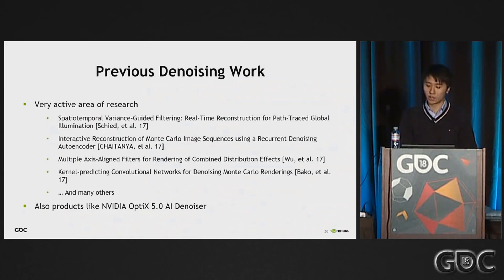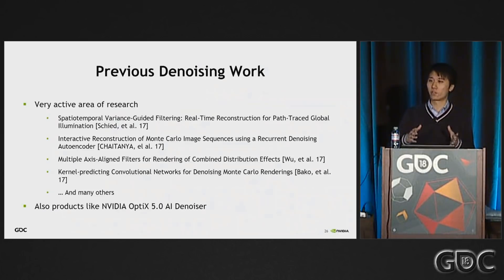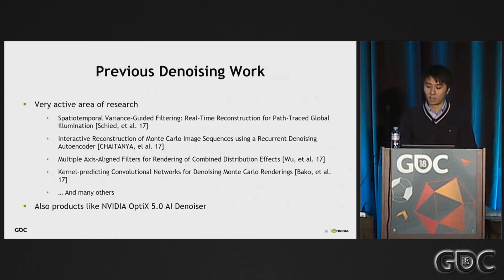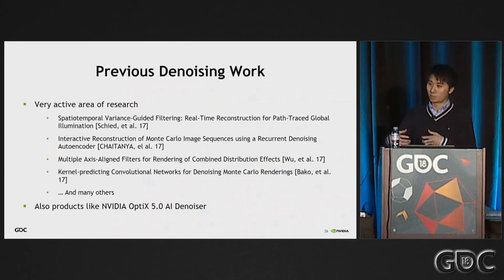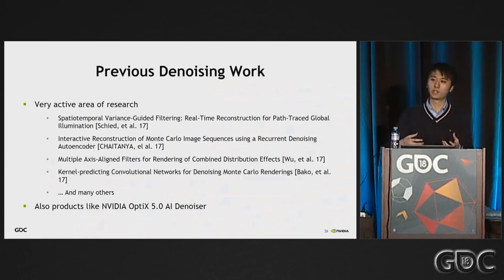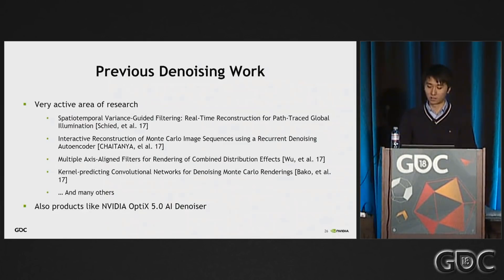The SVGF work basically used the spatial information from the current frame combined with temporal information from history frames to denoise one sample per pixel path tracing and achieved really good results. And next, the recurrent autoencoder work tries to achieve the same thing by feeding everything to a neural network and letting it figure out the sequential relationship between the history frame and the current frame. It's quite amazing that a neural network can also do this type of thing quite well.